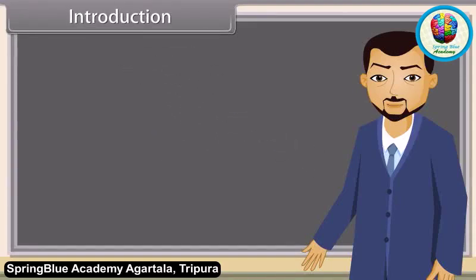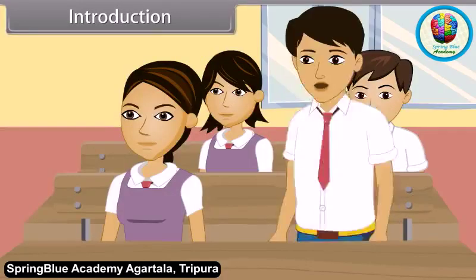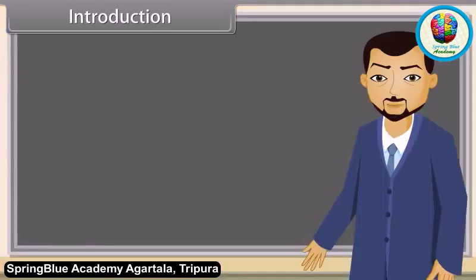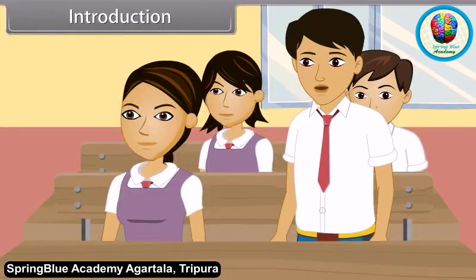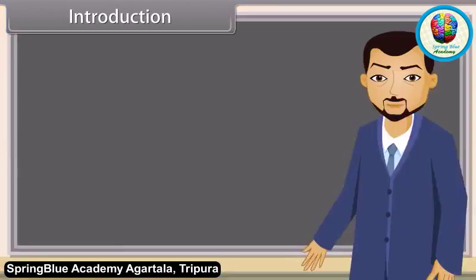Arun, how much you scored in science last year? Teacher, 72. And how much in maths? Teacher, 84. 72 in science and 84 in maths.